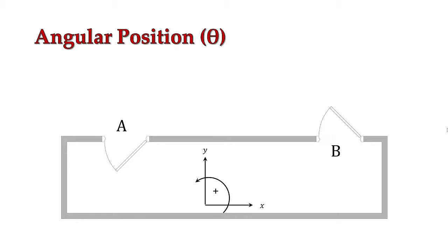So now let's talk about angular position. I should mention that all of the angular quantities are going to be denoted with a Greek letter. In this case, our Greek letter for angular position is going to be theta. And our angular position is simply going to be our orientation within a frame of reference.